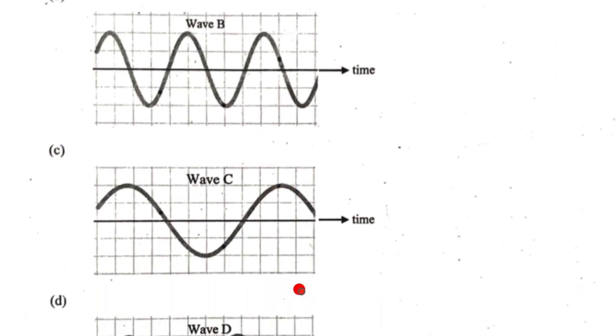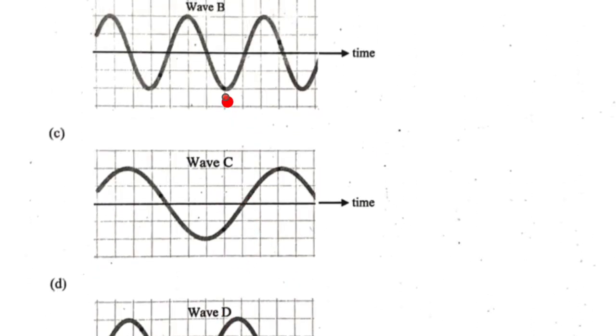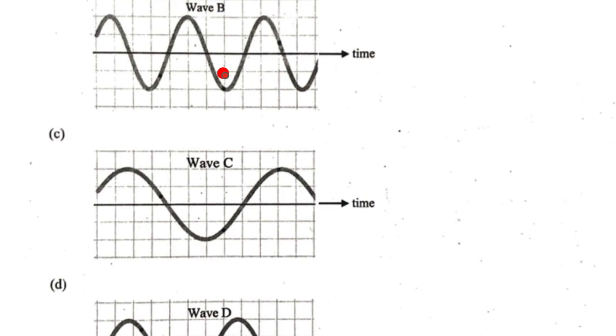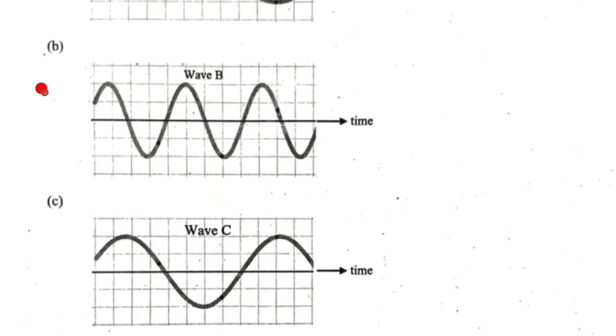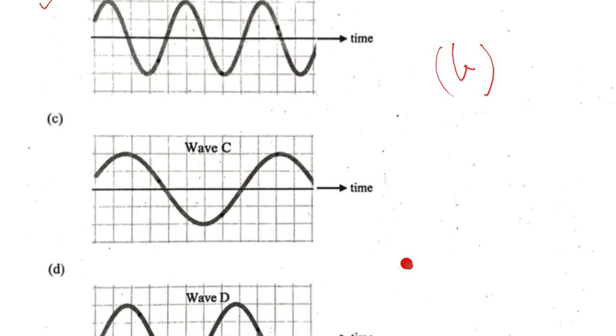Here it is like 1 and a half wave. This is 2 waves. So the maximum frequency will be B. So this is the correct option for the second part.